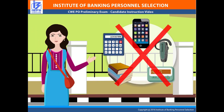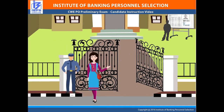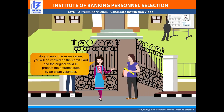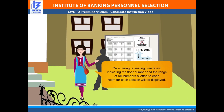The following banned items will be strictly not allowed inside the premises of the examination: pagers, calculators, Bluetooth, books, notebooks and cell phones. As you enter the exam venue, you will be verified on the admit card and the original valid ID proof at the entrance gate by an exam volunteer. On entering, a seating plan board indicating the floor number and the range of roll numbers allotted to each room for each session will be displayed.